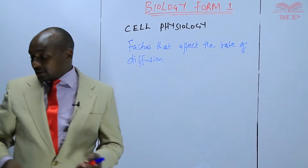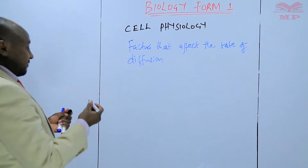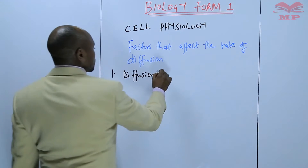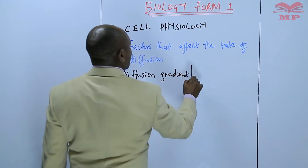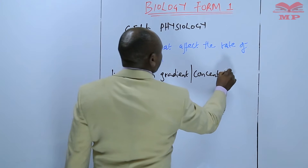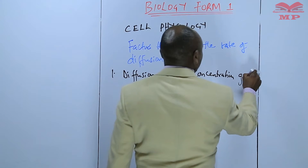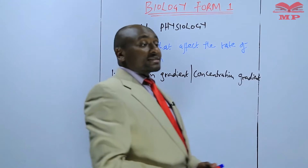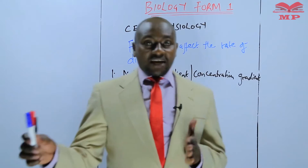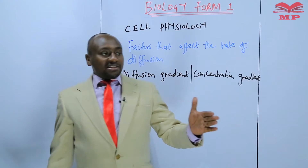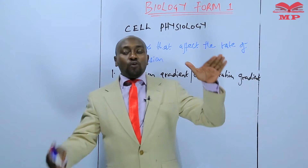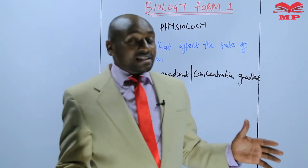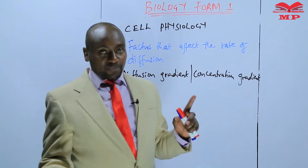One of the factors that affect the rate of diffusion is a factor called diffusion gradient, or concentration gradient. A diffusion gradient is the difference in concentration between two surfaces. You may have one surface that is of high concentration and another surface that is of low concentration. So we can say this is the concentration difference between two regions.